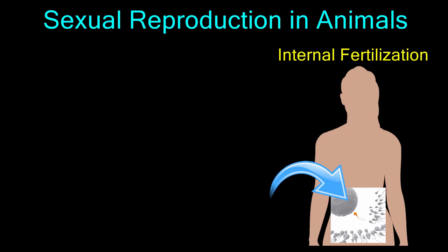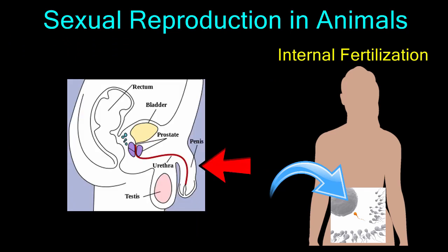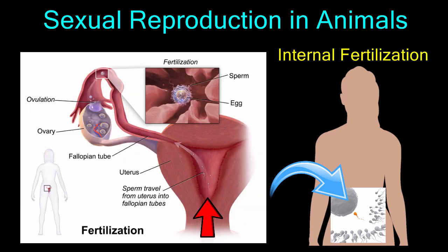Internal fertilization required the evolution of the penis in male animals so they could deposit sperm inside the body of the female. Once sperm enter the female reproductive system, they must swim in search of the egg. Internal fertilization is achieved when a sperm penetrates the egg cell. Internal fertilization was an important step in the evolution of land-dwelling animals since it freed them of their dependence on water for reproduction.